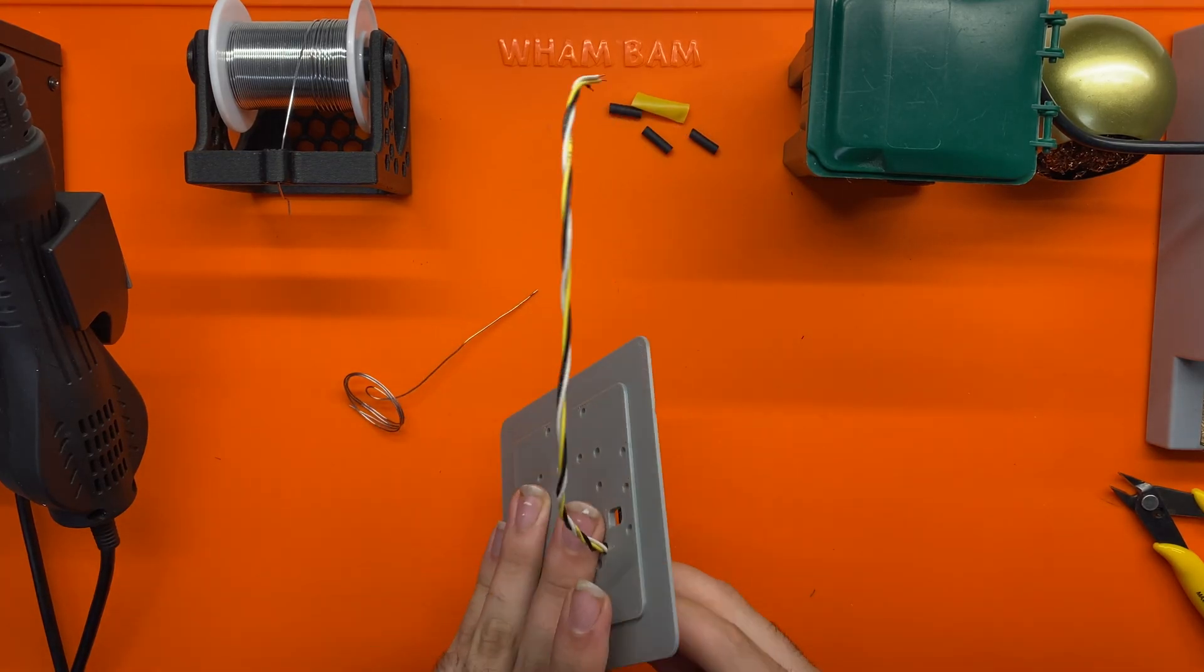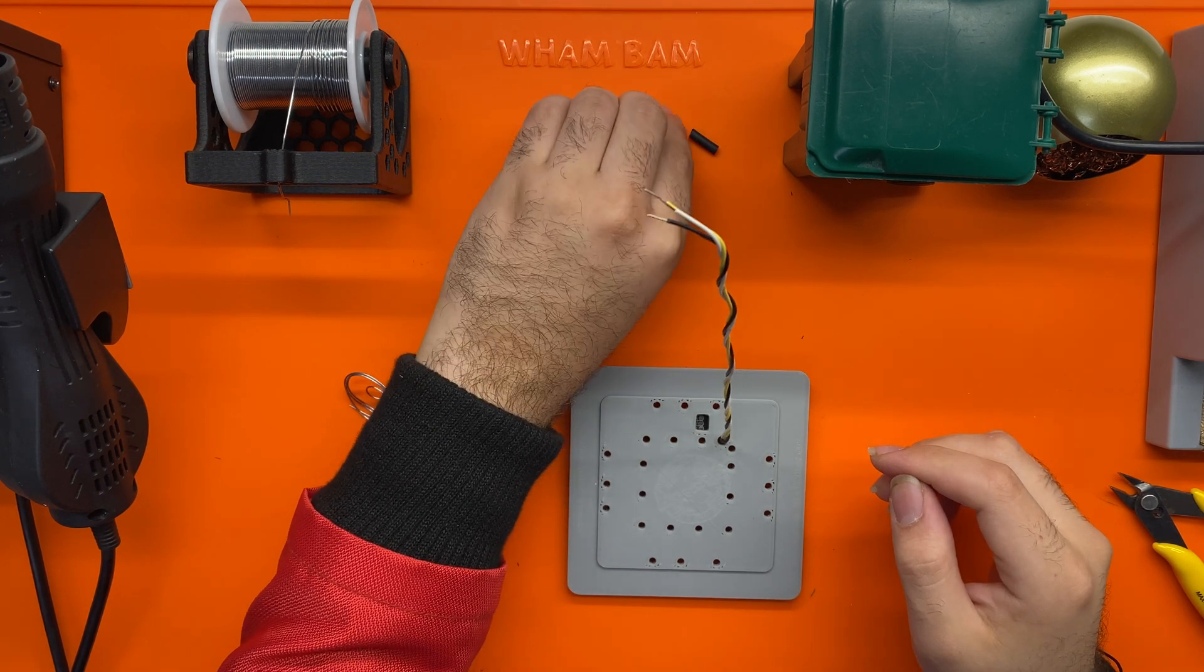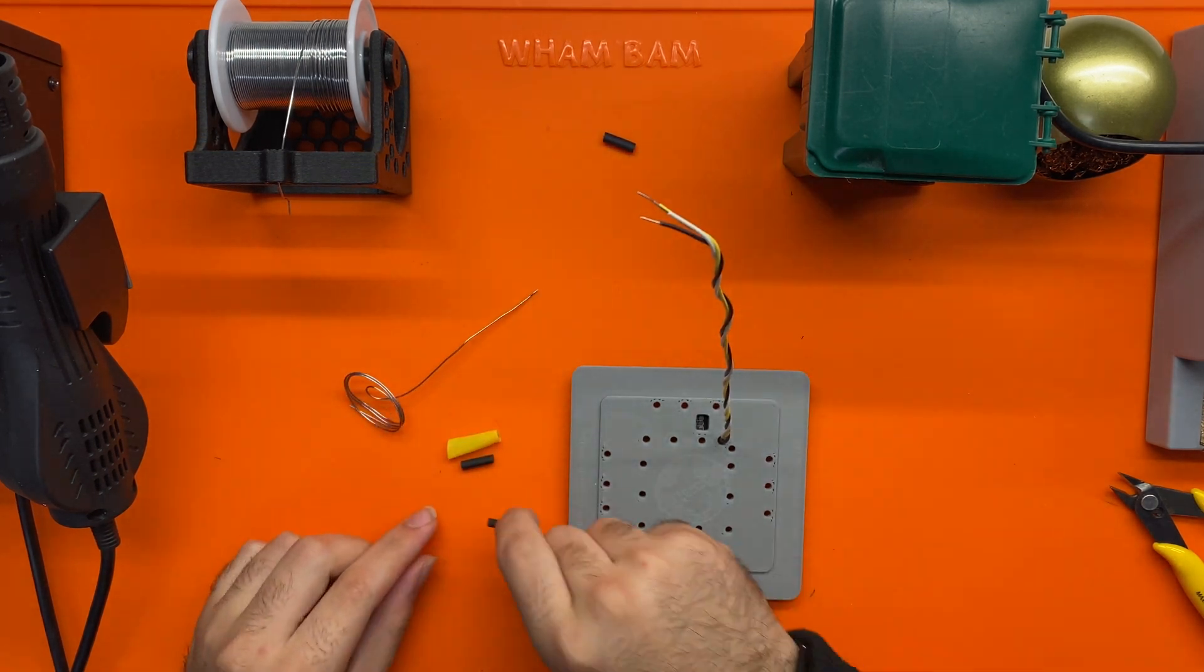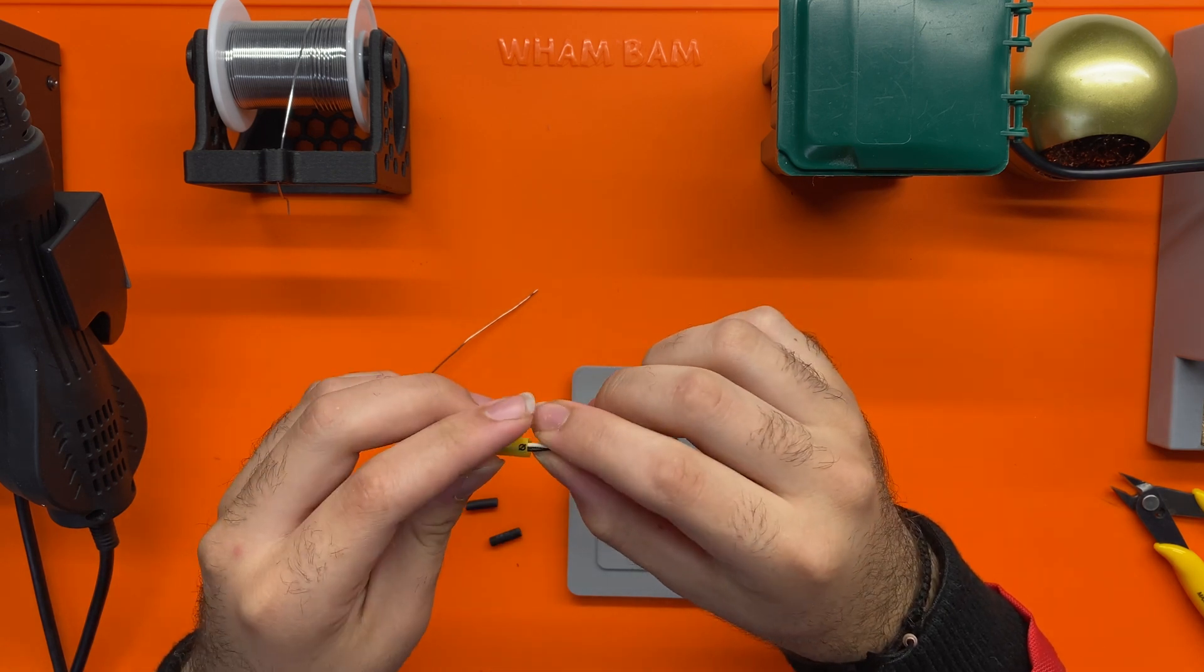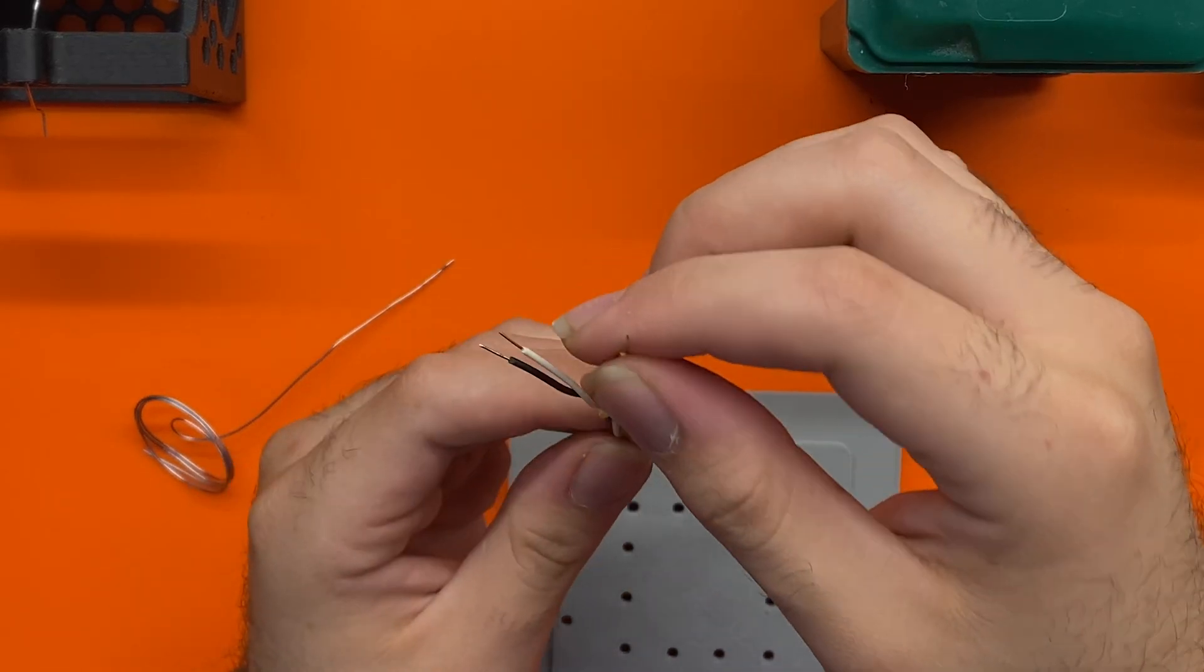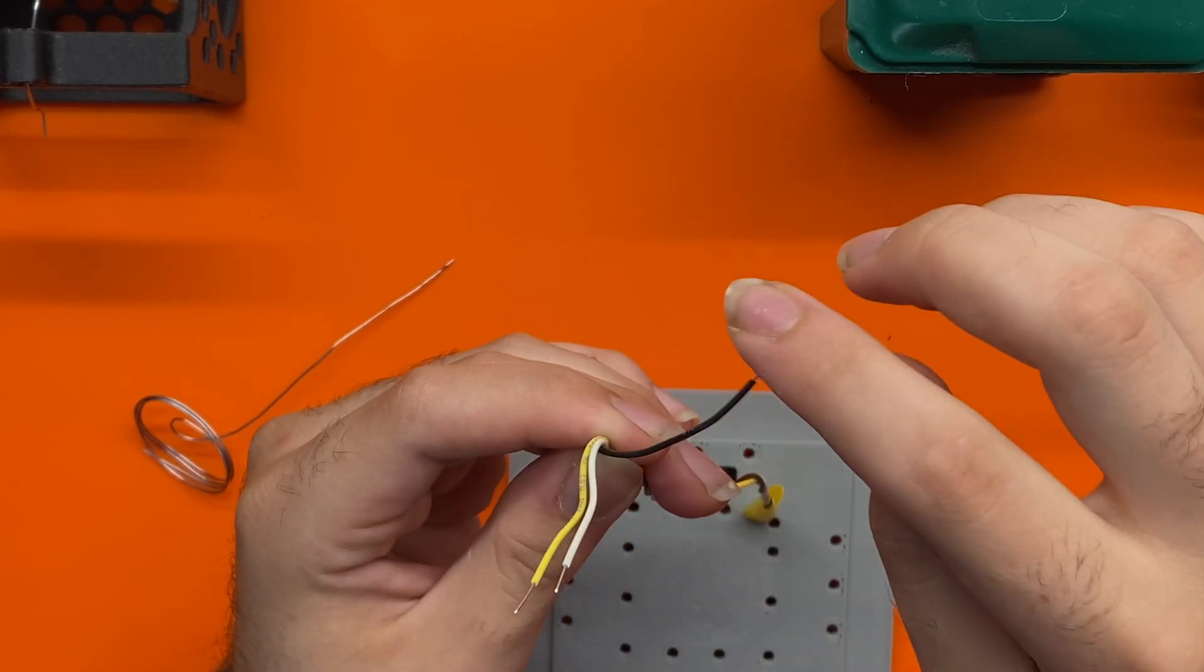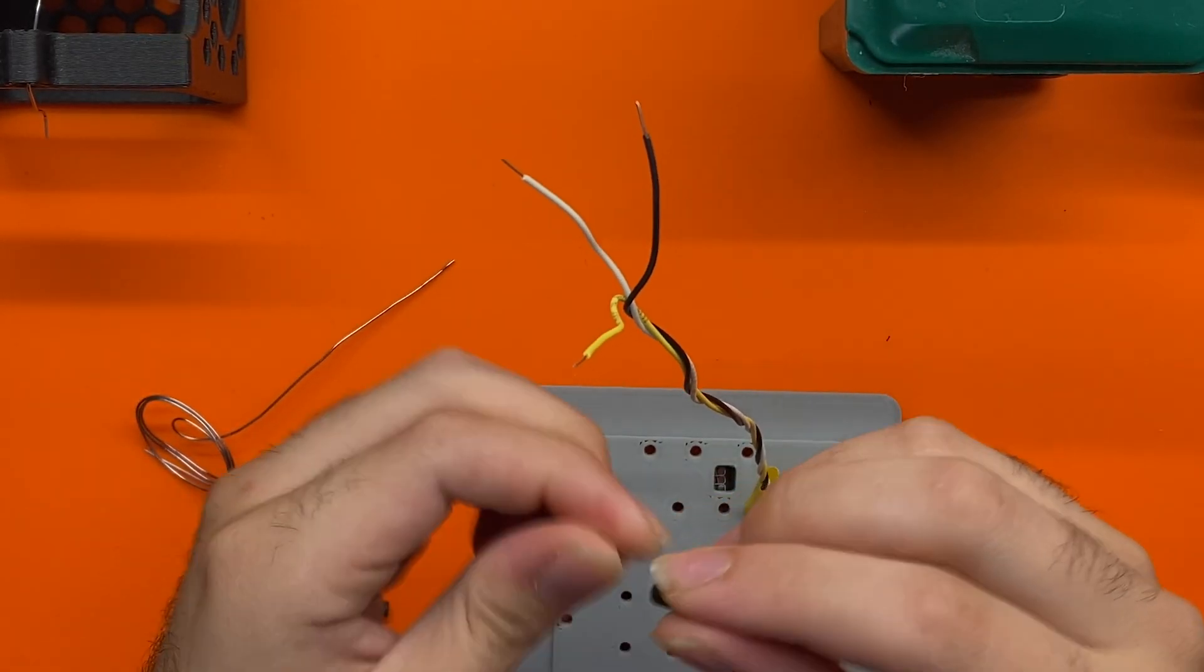It should look like this. We'll switch over. Next, we're going to grab our heat shrink, first with the larger one. We're going to separate these a little bit, put in the smaller pieces.